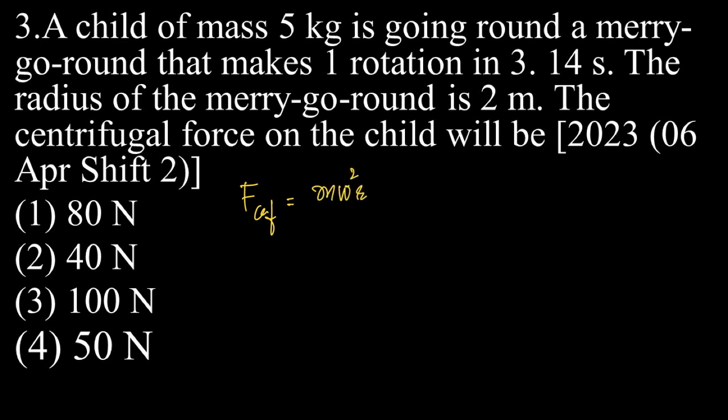What's given to us? We've been given that the mass is 5 kg, so m is known. Radius is 2 meters, so r is known. Now, what we don't know is omega.